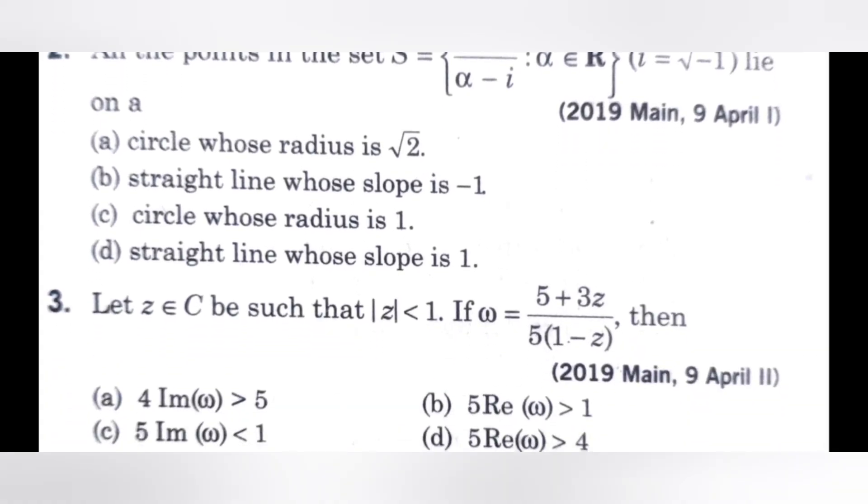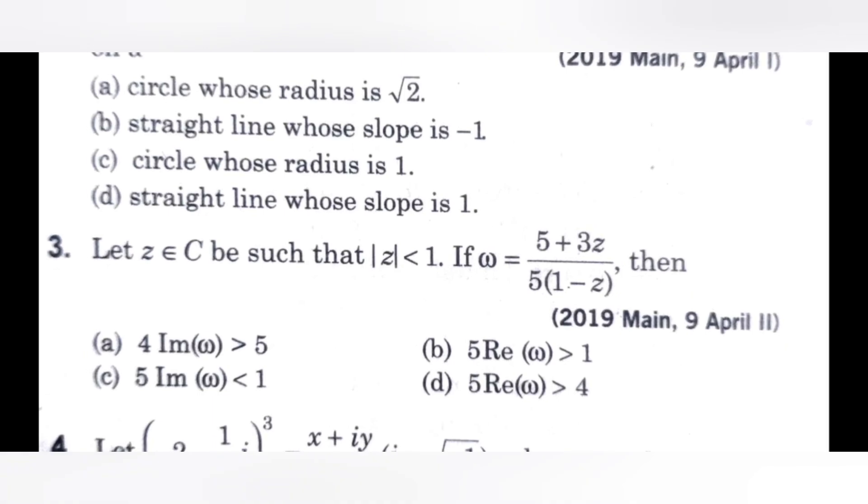Next, third question. Let Z belongs to C be such that mod Z less than 1. If omega equals 5 plus 3Z divided by 5 times 1 minus Z, then check the options A, B, C, D.